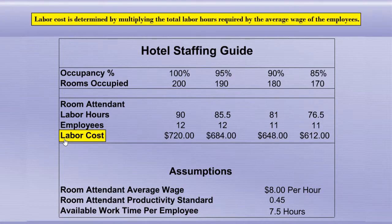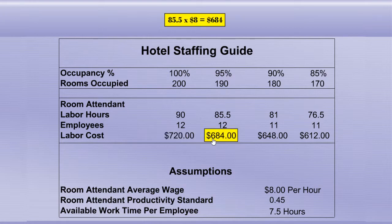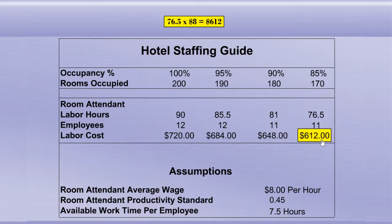Labor cost is determined by multiplying the total labor hours required by the average wage of the employees. 90 times $8 equals $720. 85.5 times $8 equals $684. 81 times $8 equals $648. 76.5 times $8 equals $612.